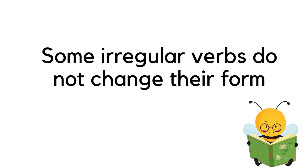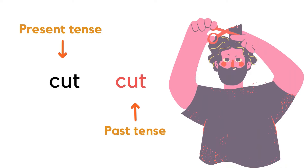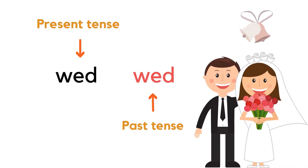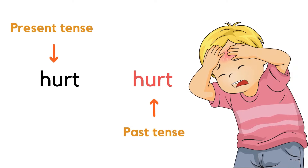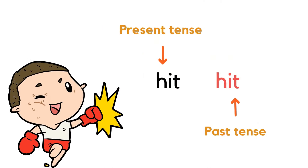Some irregular verbs do not change their form. For example: cut — cut, split — split, wet — wet, hurt — hurt, and hit — hit.